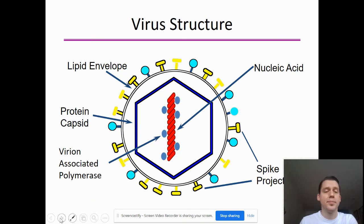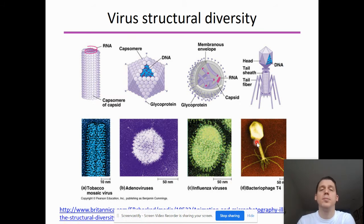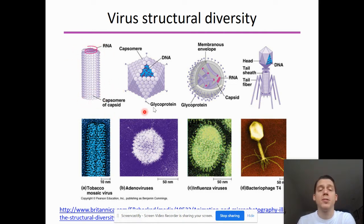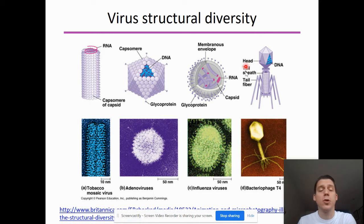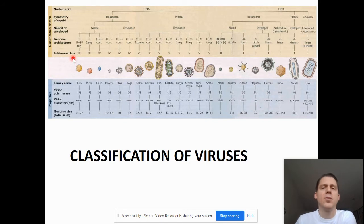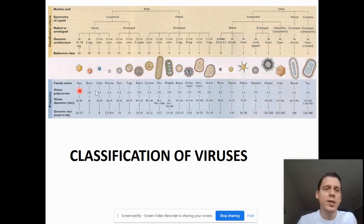There are many different shapes of viruses — viruses are incredibly diverse. Here we have the tobacco mosaic virus (a plant virus), the adenovirus, influenza, and a bacteriophage, which is a virus that infects bacteria — you might remember this from the Hershey and Chase experiment. There are so many different types: parvo, influenza, and all kinds of different structures.